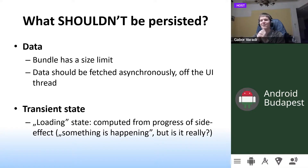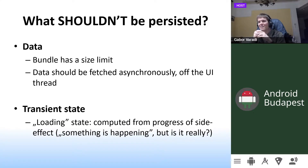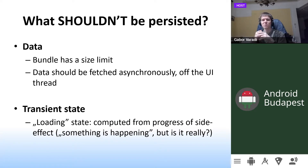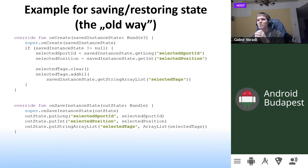What shouldn't be persisted? You can save data in local storage — for example using Room, or originally SharedPreferences for the simplest cases — because the bundle has a size limit. If I recall correctly, the size limit is one megabyte, so if you are trying to save 100 items or even a bitmap into a bundle, that will not work. In that case you have to save the bitmap to a file and reload it from there. Data should be fetched asynchronously off the UI thread based on the current state. What also shouldn't be persisted is transient state — for example, a boolean `isLoading` tracking an operation. If you persist that and don't restart the process, you can immediately end up with an infinite loading dialog.